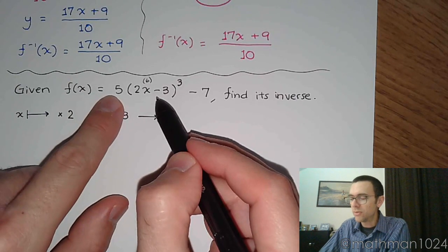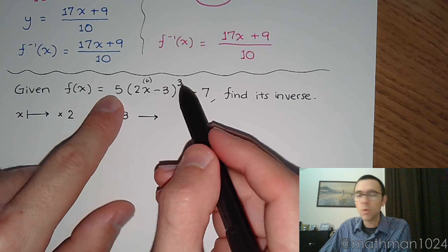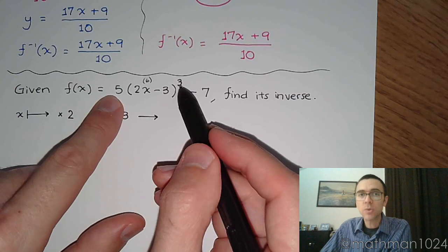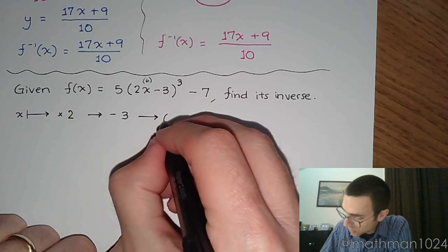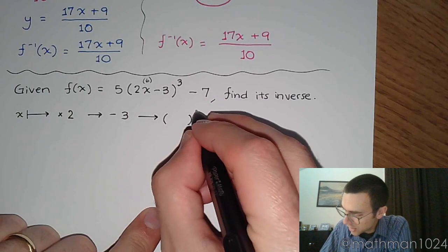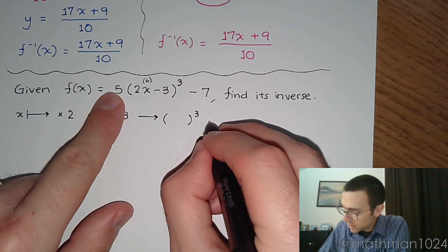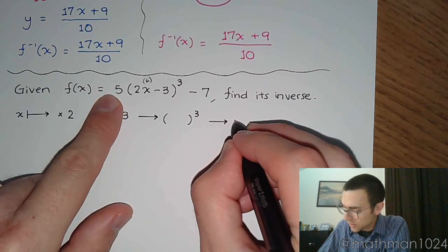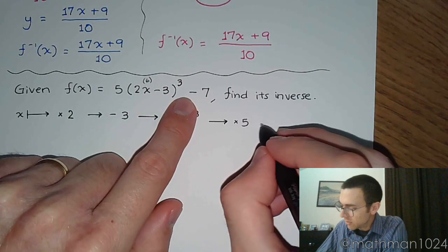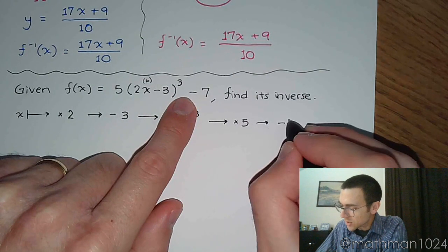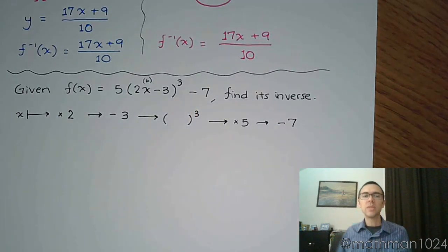Well, we know the order of operations would say that powers take precedence over multiplication. So we would then have to raise that number to the third power. Then the coefficient of 5 comes into play, so that's times 5. And then once you get all of that calculated, you would then subtract 7. That's what the order of operations would state for any number that you plug in.